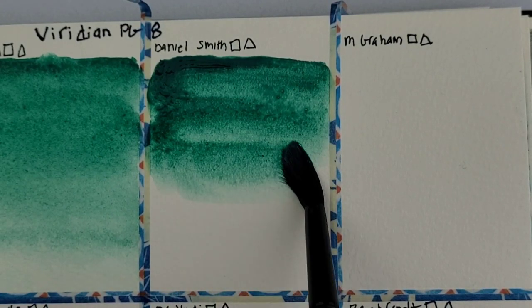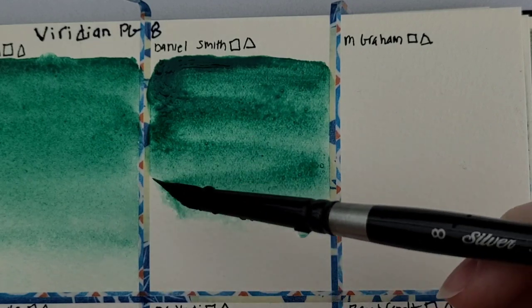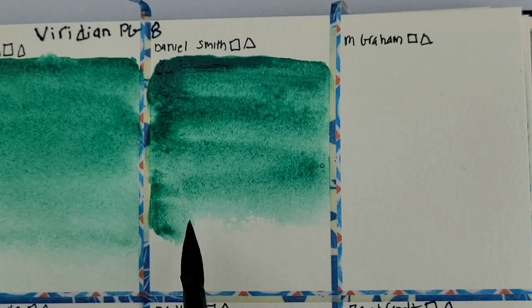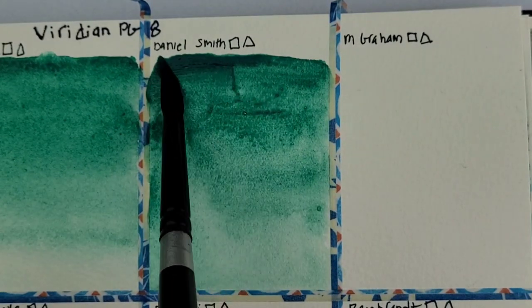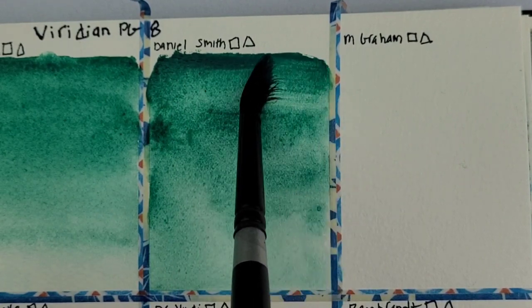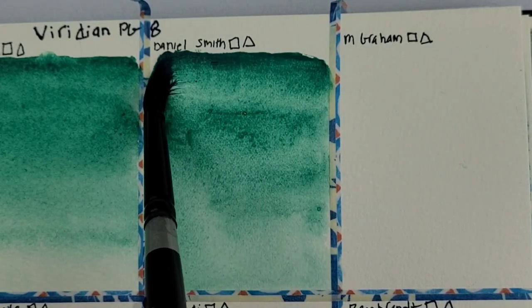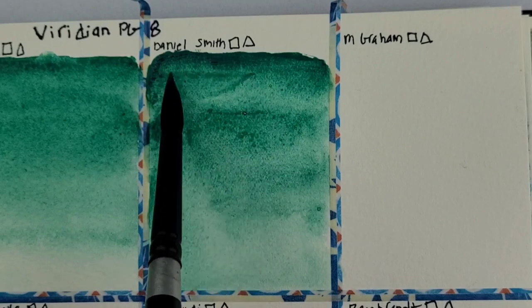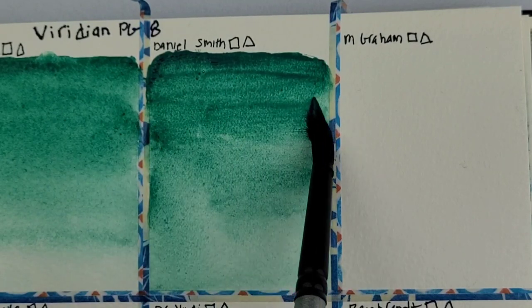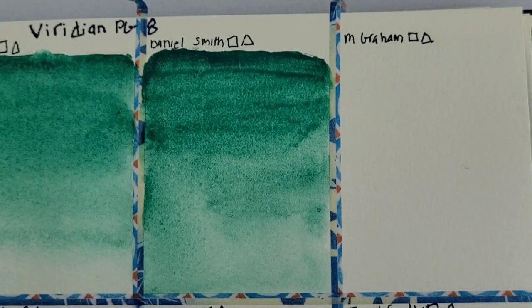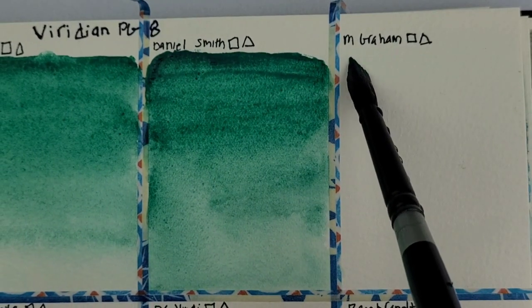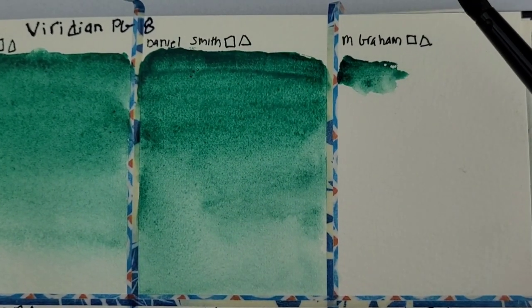So now I am at Daniel Smith and I did Holbein before this. I was surprised that Daniel Smith wasn't more granulating just because they're Daniel Smith. Like I said, Winsor and Newton is really the one that surprised me. Obviously it is granulating but just not as much.